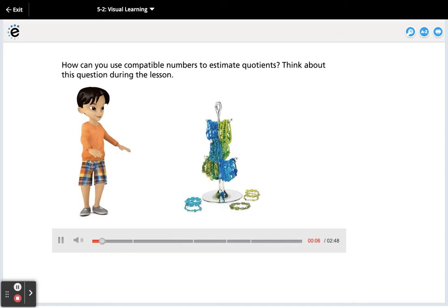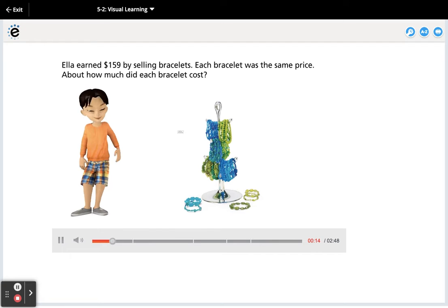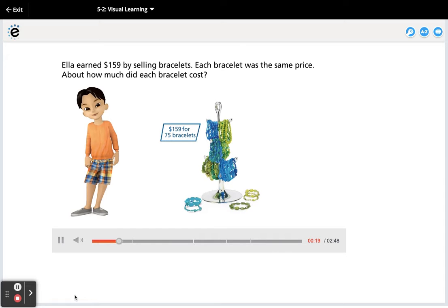How can you use compatible numbers to estimate quotients? Think about this question during the lesson. Ella earned $159 by selling bracelets. Each bracelet was the same price. About how much did each bracelet cost?